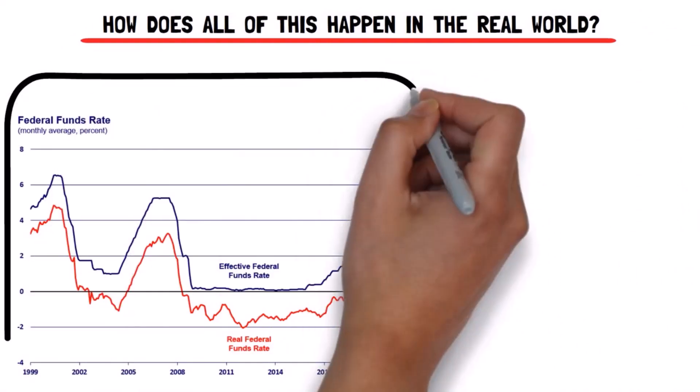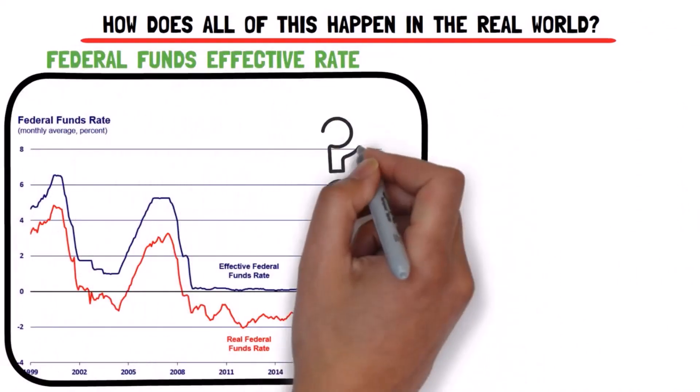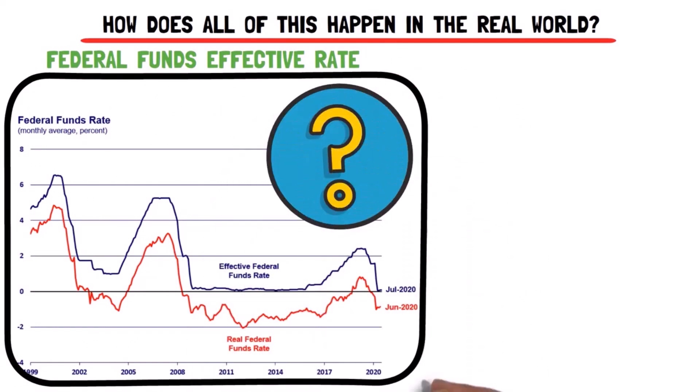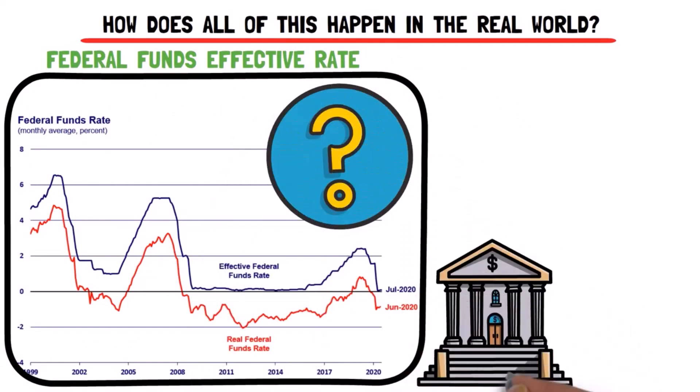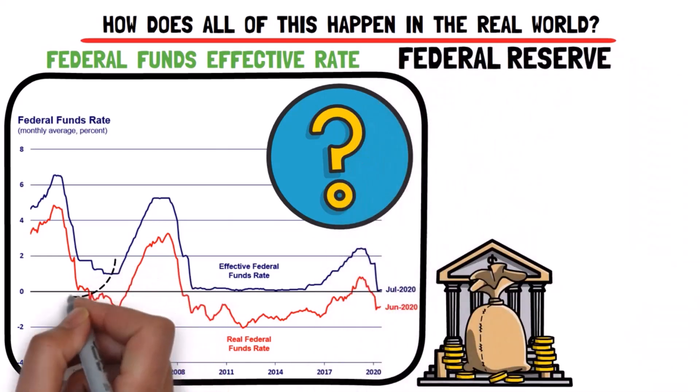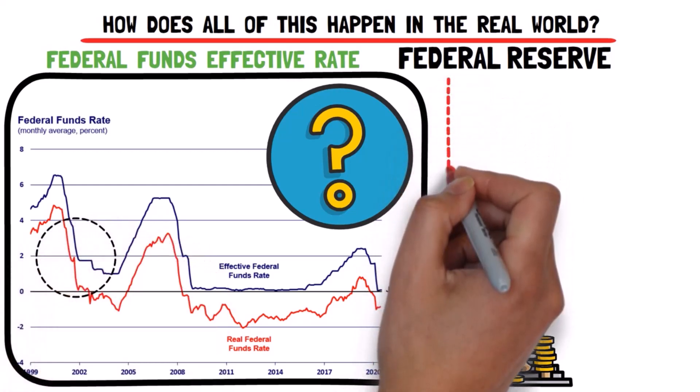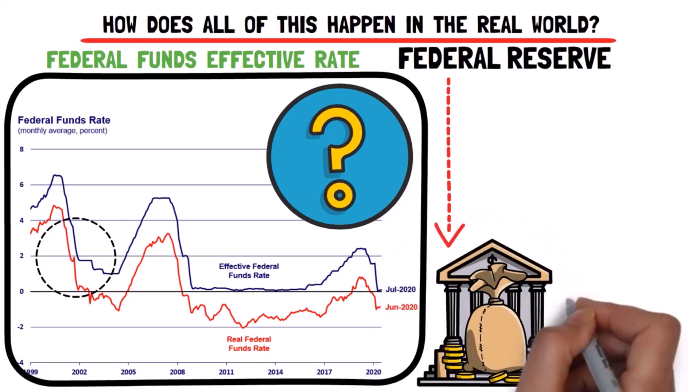Now how does all of this happen in the real world? Imagine you have a chart showing something called the Federal Funds Effective Rate. This is basically how much it costs for banks to borrow money from the big central bank called the Federal Reserve. It's a bit like our earlier story about the town bank. Back in 2001, when things weren't going so well in the economy, the Federal Reserve decided to make it easier for banks to borrow money. This was supposed to help the economy, but it didn't work out as planned.